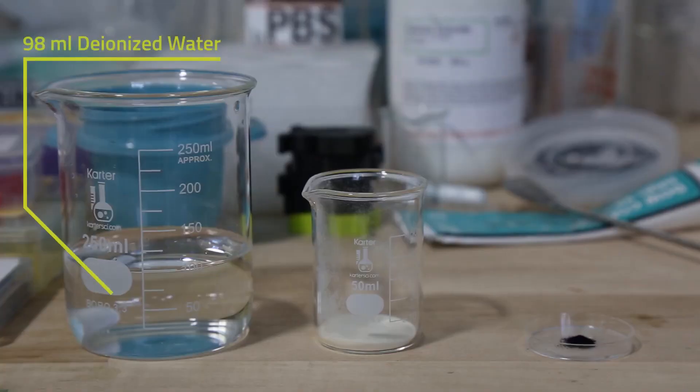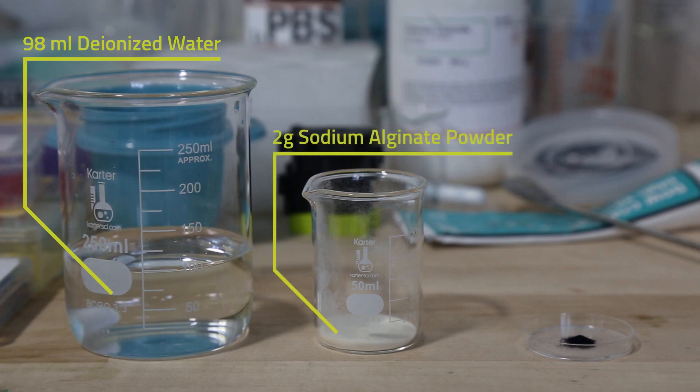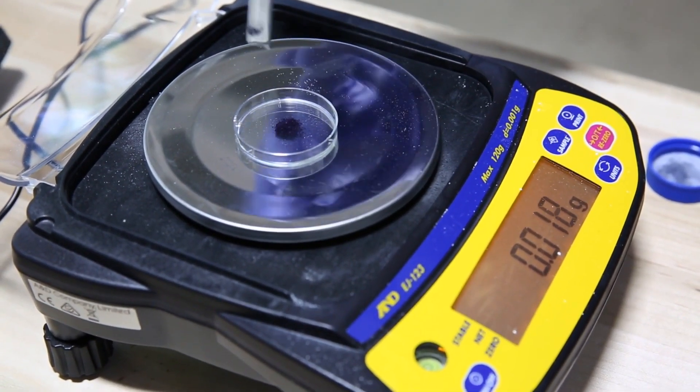We need 98 milliliters of deionized water, 2 grams of sodium alginate powder, and 0.02 grams of Alcyon blue dye. The dye is because the sodium alginate is clear, so we want to be able to see the print when it's printing.